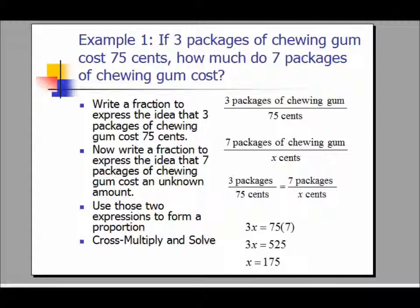Cross multiplying gives 3x equals 75 times 7. Therefore, 3x equals 525 cents. Dividing both sides by 3 gives x equals $1.75.